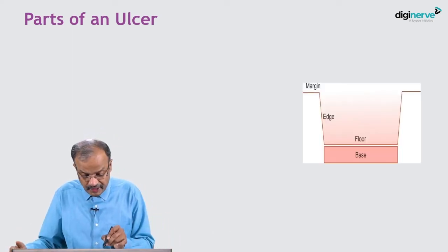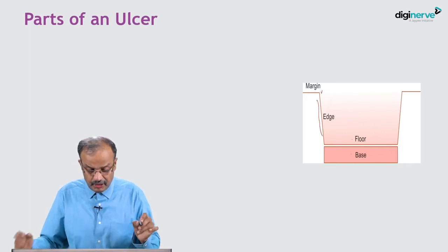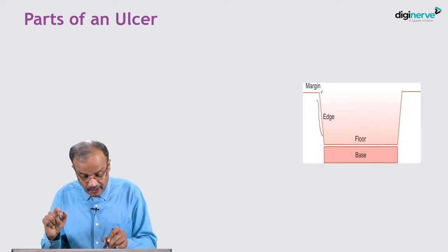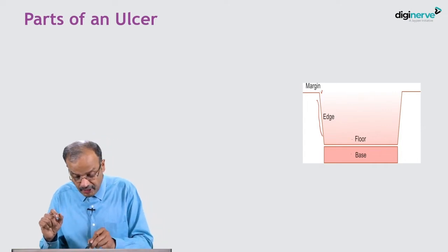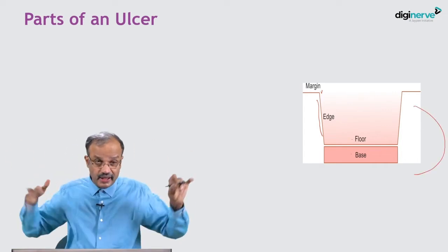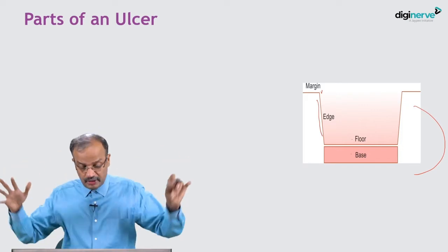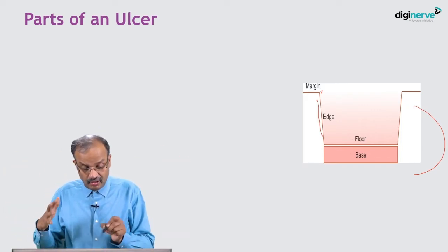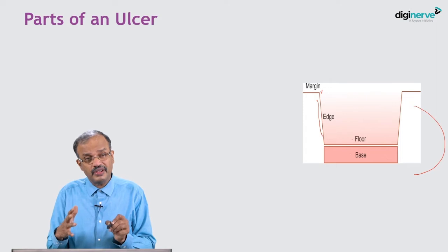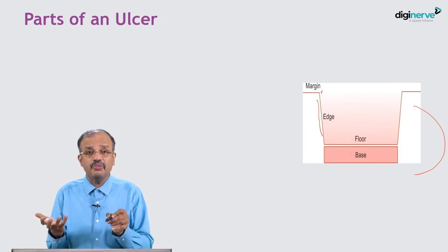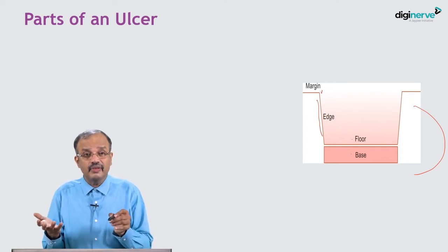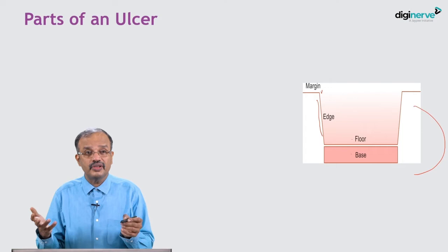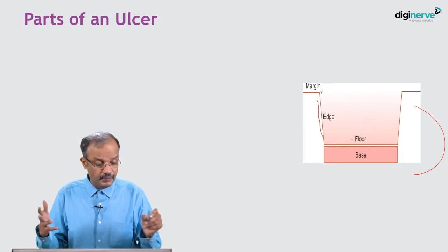Looking at the diagram: there is a margin, an edge, a floor, and a base - those are the four basic parts. Around the ulcer there is also a surrounding area. The surrounding area of the skin or mucous membrane is an additional part - even though not exactly part of the ulcer, it is included because it is also important when you give a conclusion or clinical examination.